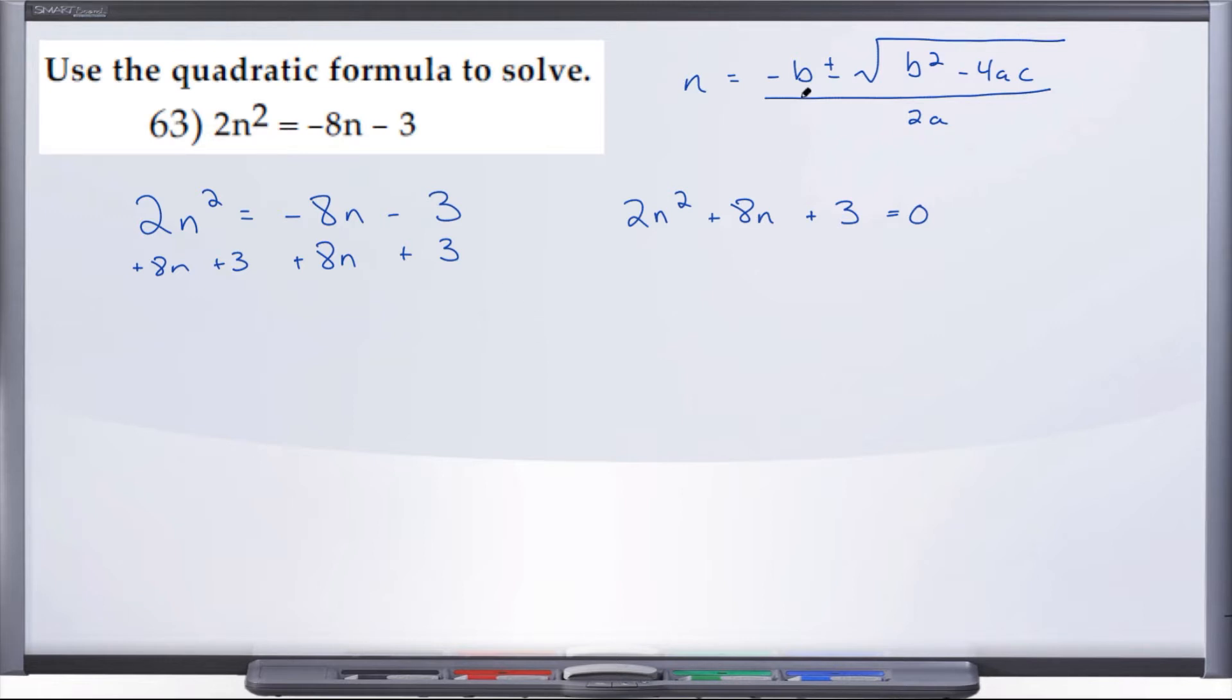First thing we want to do is identify a, b, and c, because those are the values that we need to plug into the quadratic equation in order to solve for n. So a, b, and c: a is always going to be the coefficient of your squared term, so in this case 2.